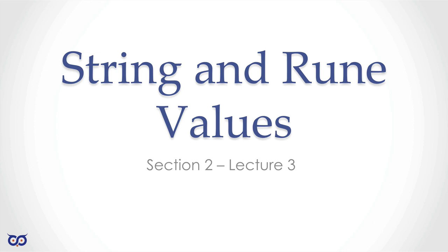Welcome to Lecture 3, Section 2. Today we're going to be talking about string and rune values. In the previous lecture we looked at Boolean and numeric values — numerics have three types: whole numbers, floating-point numbers, and complex numbers. Now we're going to look at strings. The reason we include runes is because strings are made up of runes — and runes by themselves are actually numbers.